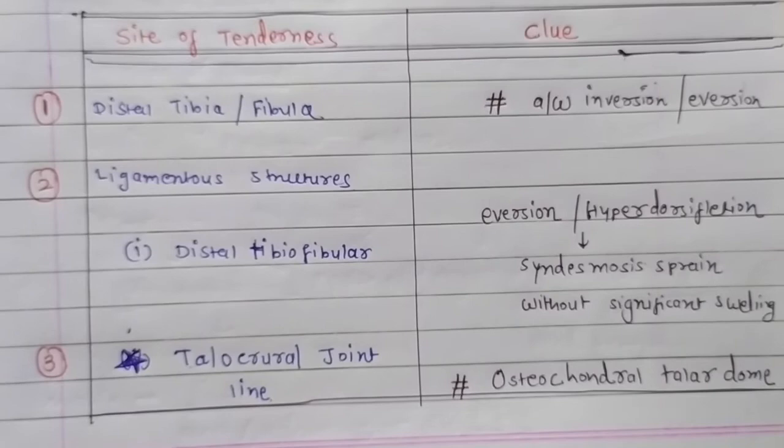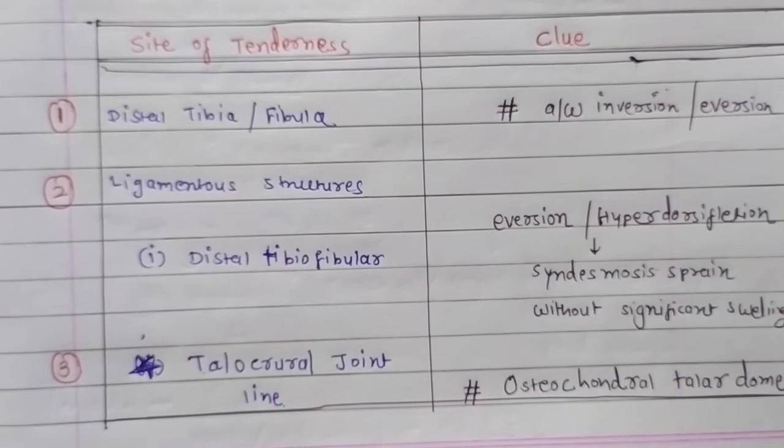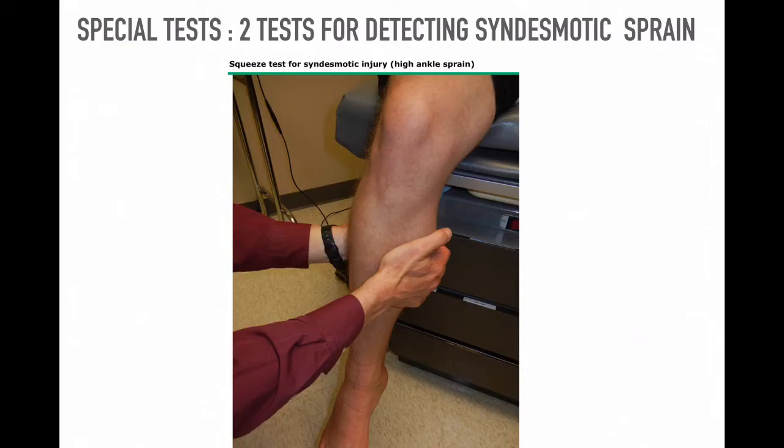Tenderness over the talocrural joint line indicates fracture of the osteochondral talar dome, which is due to direct trauma between the talus and the fibula or tibia. There are some special tests for ankle sprain — two tests for detecting syndesmotic sprain.